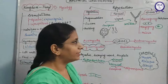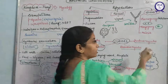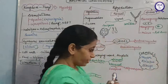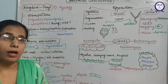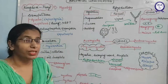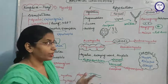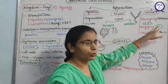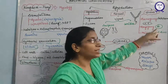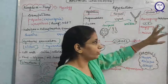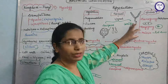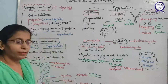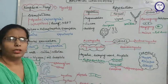After plasmogamy, the nuclei fuse together — that is known as karyogamy, the fusion of nuclei. After karyogamy, the third step is meiosis — reductional division — where the chromosome number becomes half. This step follows the dikaryophase. When nuclei fuse together, two nuclei are known as the dikaryon, and this phase is known as dikaryophase. After dikaryophase, meiosis takes place producing haploid spores that disperse by air and water currents.